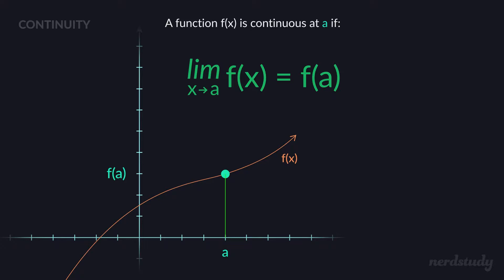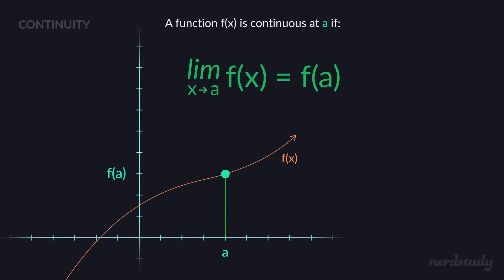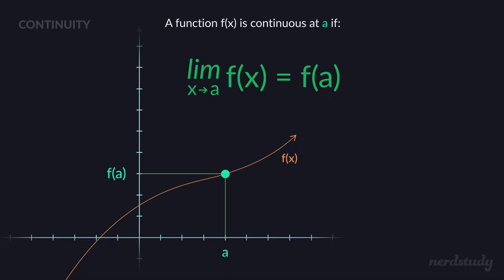This might sound like it doesn't help us, but if you take a moment to think about it, it really does. We know the concept of a limit as x approaches a for a function. Since we didn't put a direction, we're referring to both directions — the idea of approaching a from both the left and the right on x, and looking at what y value is being approached. Whatever y value that is, it should equal the same value as when you just plug a in and get a y value.